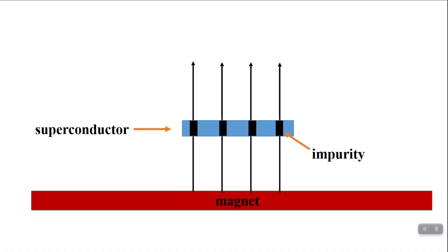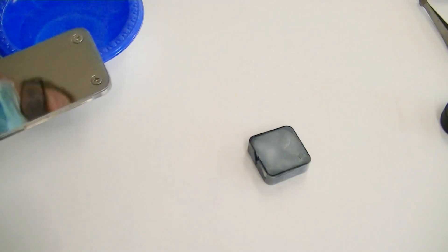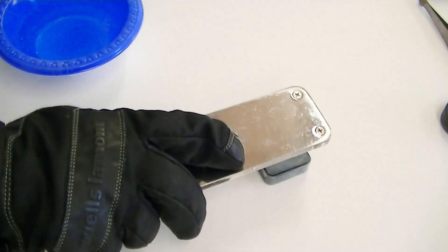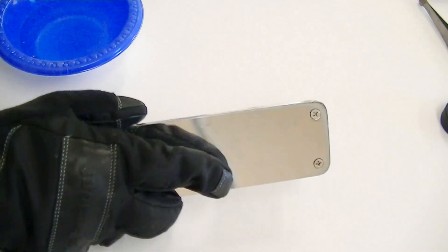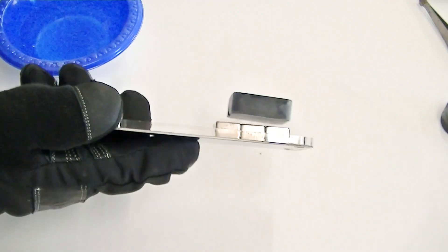This animation will help to illustrate how quantum locking works. Magnetic field lines can penetrate impurities which are not superconducting. Any movement of the superconductor would cause magnetic field lines to penetrate superconducting material rather than the impurities. Of course this can't happen, so the disk remains locked in an orientation where the magnetic field lines penetrate the impurities and not the superconducting material.